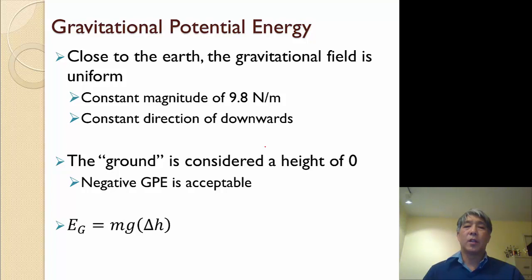So let's look at gravitational potential energy. Close to the Earth, we are aware that the gravitational field is uniform and has a constant magnitude of 9.8 newtons per meter, or we're also familiar with it as 9.8 meters per second squared. And for us to calculate gravitational potential energy, we must define an arbitrary ground level. Frequently, that's going to be the lowest point in the picture, but it's perfectly okay to have a negative gravitational potential energy. It simply means that you are lower than the ground level.